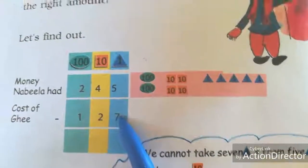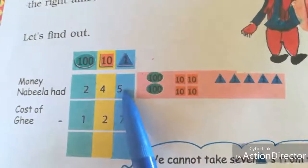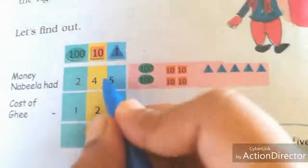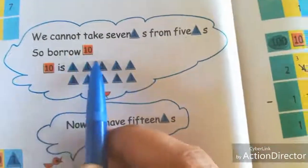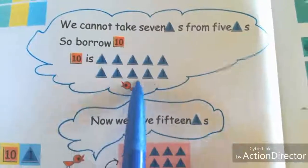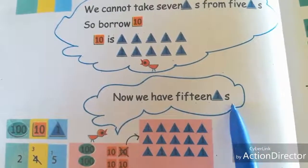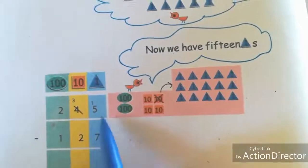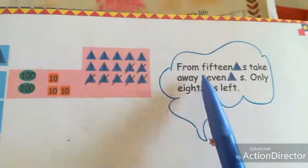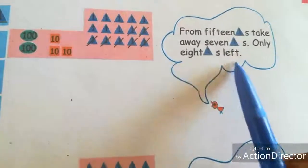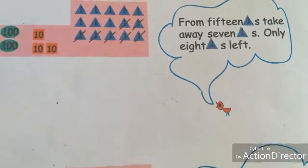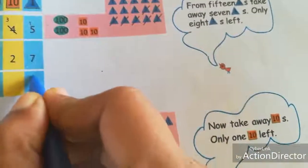245 minus 127. Ones: 5 minus 7 is not possible. We have to borrow from the tens. 10 ones are borrowed, so we now have 15 ones and the tens become 3. 15 minus 7 — take away 7 ones from 15 ones — only 8 ones left. Write 8 ones.